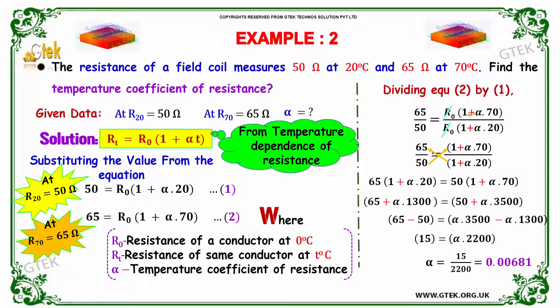And multiplying here you got 65 into 1 plus alpha into 20 is equal to 50 into, is equal to 1 plus alpha into 70. Solving it, 65, 65 into 1 is 65, plus 65 into 20 is 1300 alpha.